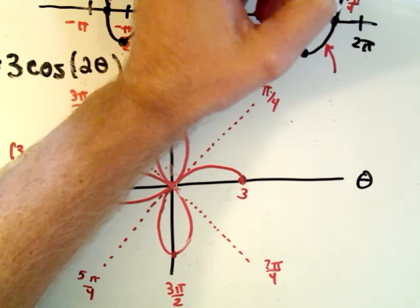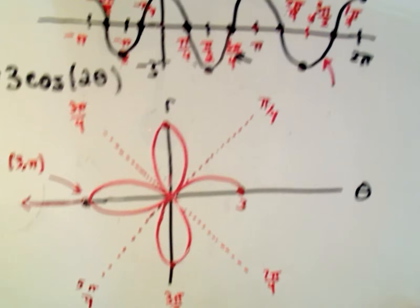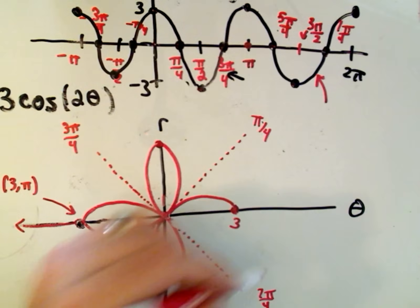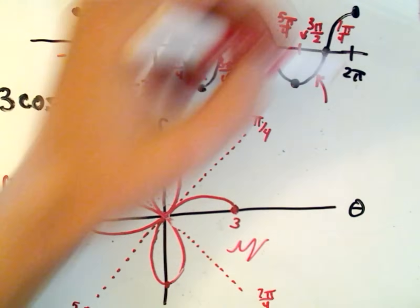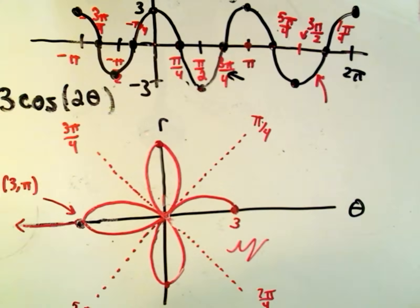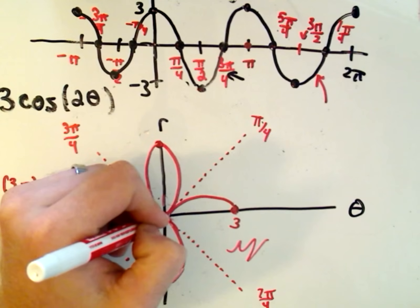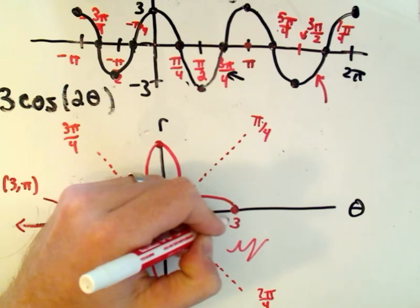Last but not least, as we graph between the angle 7pi over 4 and 2pi, that should be in this quadrant. And it is because the radius is actually positive. The radius goes from a distance of 0 out to a distance of 3.